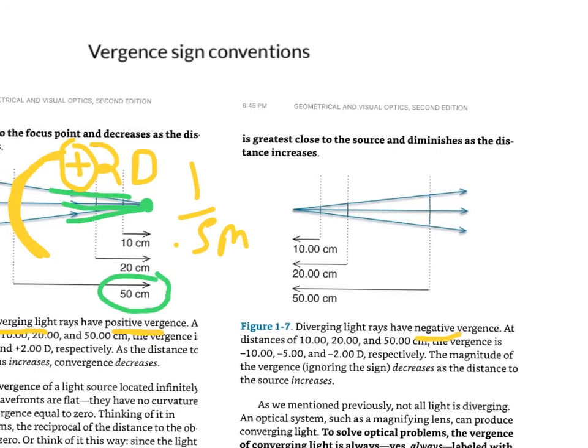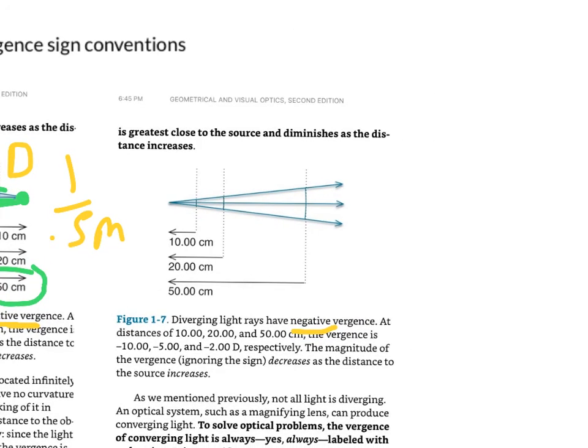Conversely, you can have diverging light. If you have diverging light, then you will have a negative vergence. So here you have a wavefront, and because the light rays are diverging from each other, you will have a negative vergence.